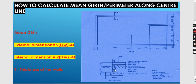Now, for us to get this mini guard, we can use two ways. We can use external dimension. The formula for external dimension is 2 into (length plus width) minus 4T. When you are talking about external dimension, it is from this line here up to the other end — that is the full outside measurement, the external.